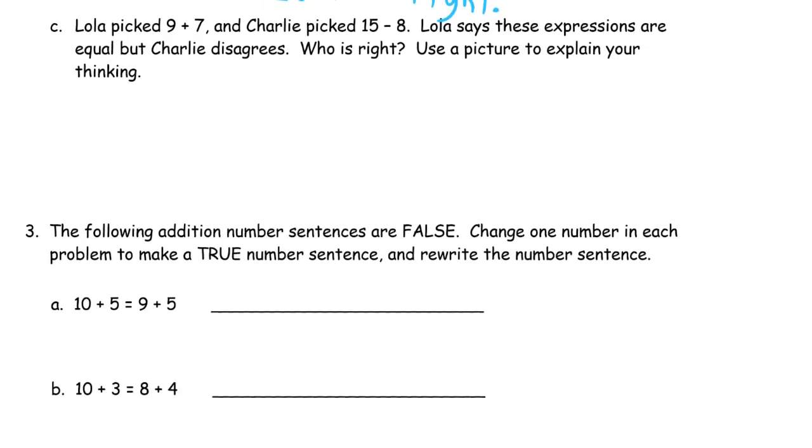Let's see what happens this time. Will Charlie finally get one? Lola picked 9+7, and Charlie picked 15-8. Okay, so Lola picked 9+7. Lola says these expressions are equal, but Charlie disagrees. Who is right? So it says use a picture to explain your thinking. Okay, so we have to draw a picture. 9+7. 1, 2, 3, 4, 5, 6, 7, 8, 9. And then we need 7. I'll make X's for the 7 more. 1, 2, 3, 4, 5, 6, 7. So we've got 9, that's 10, 11, 12, 13, 14, 15, 16. So 9+7 equals 16.